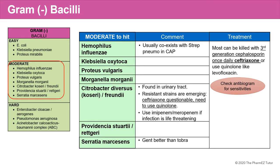Most of these moderate-to-hit gram-negatives can be killed with third-generation cephalosporins using once-a-day ceftriaxone, or quinolones like levofloxacin. But again, make sure to check the antibiogram in your area for specific sensitivities of these bacteria.